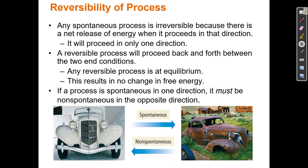Any spontaneous process is irreversible because there is a net release of energy when it proceeds in that direction. Because we're losing energy when the reaction goes from reactants to products, the reverse reaction would require an input of energy, and any reaction that requires an input of energy we call non-spontaneous. So spontaneous reactions are only spontaneous in one direction — the ball can't roll down the hill and then roll back up by itself. For example, iron can turn to rust and when it does some energy is lost.